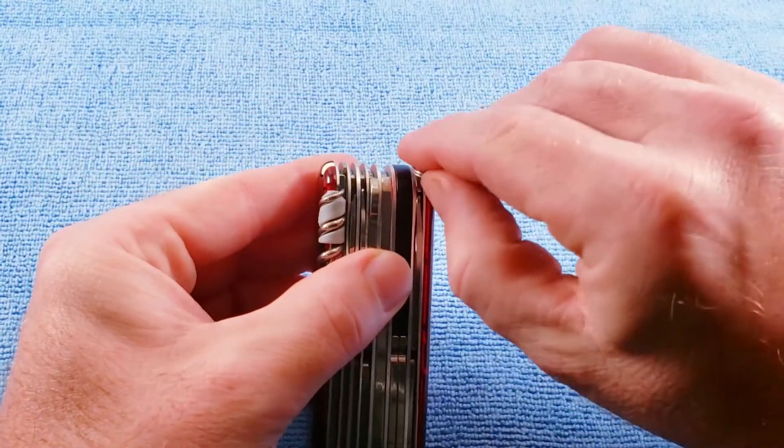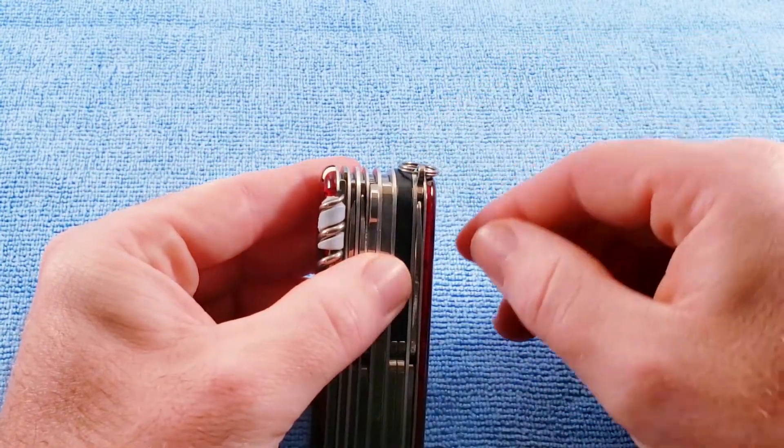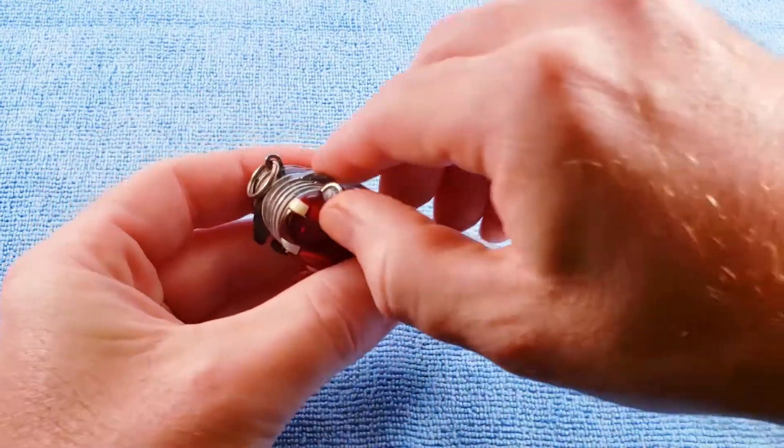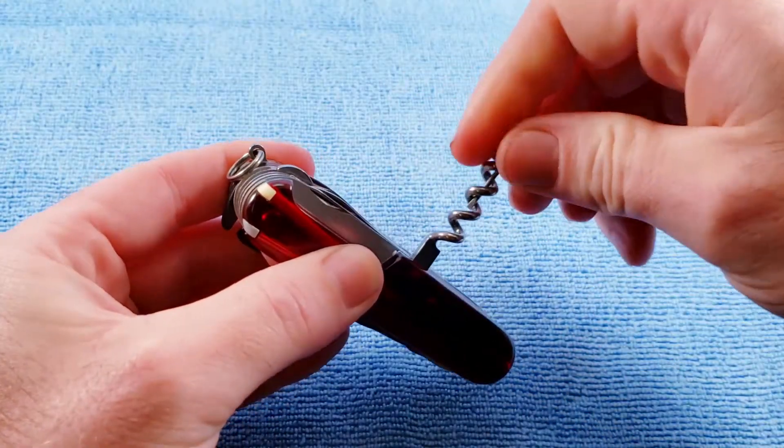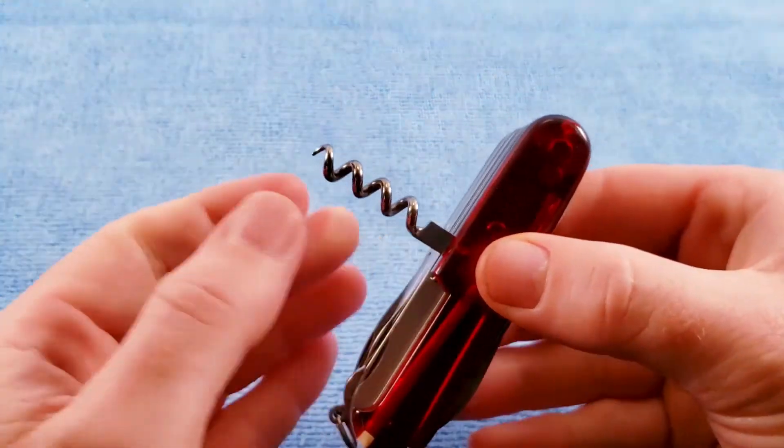As we see on this model, we get our key ring in the post-1991 location. We get our four-turn solid corkscrew.